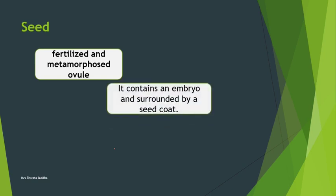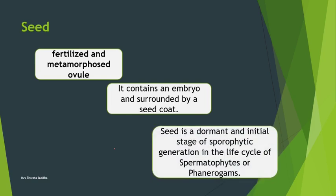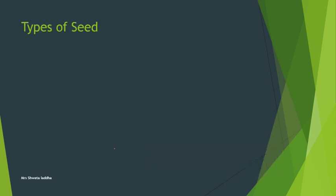Any seed contains an embryo which is surrounded by a protective covering called the seed coat. The seed is basically dormant and is the initial stage of the sporophytic generation in the life cycle of spermatophytes or phanerogams - that is, angiospermic or spermatophytic plants. It is the dormant stage which will then germinate and give rise to the sporophytic generation.